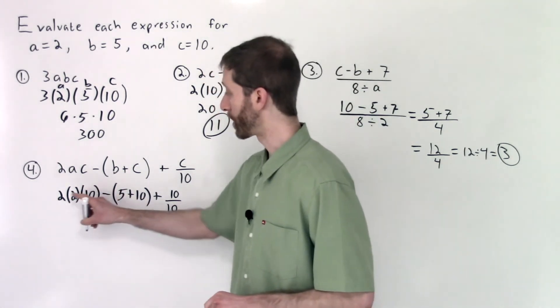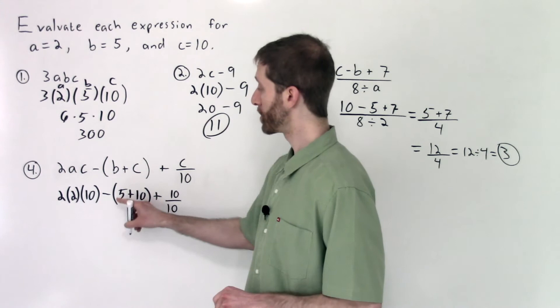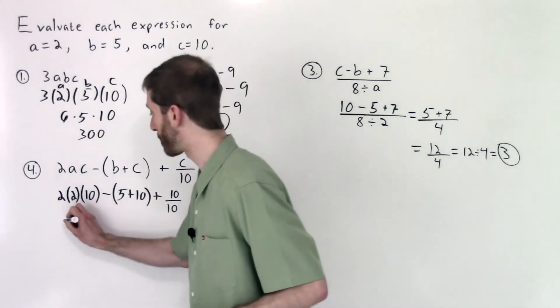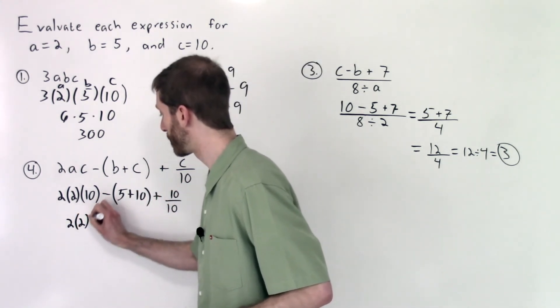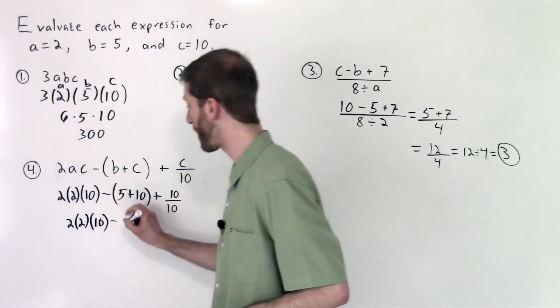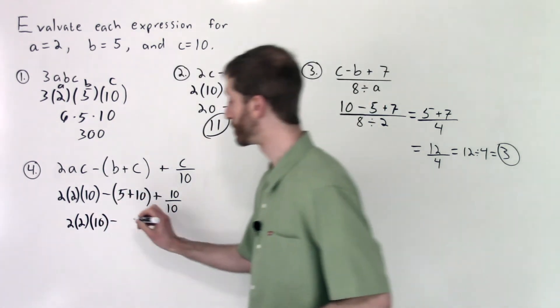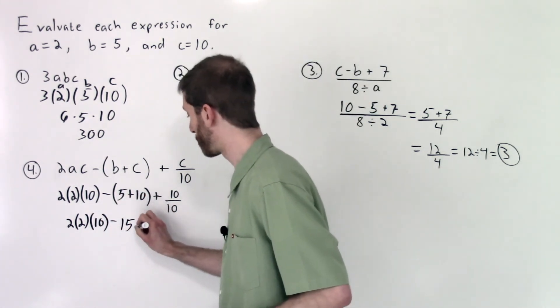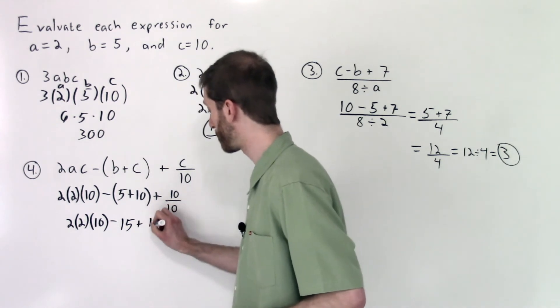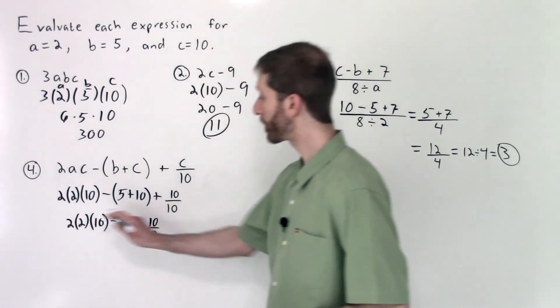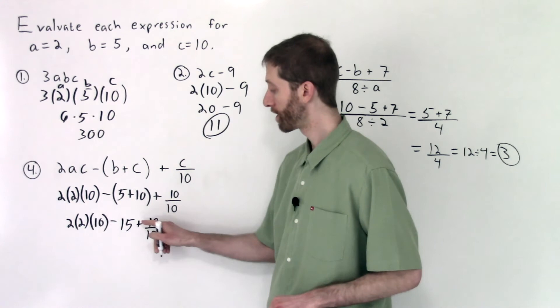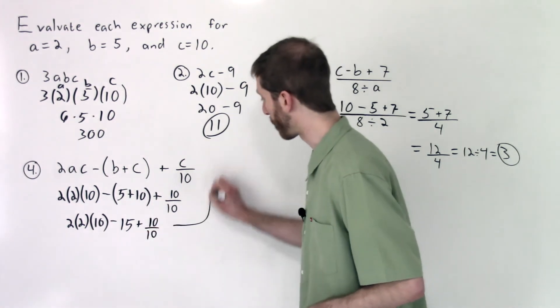Using the order of operations here, I'm going to go left to right. I noticed that I have parentheses first. So I'm going to have 2 times 2 times 10 minus 5 plus 10 is 15 plus 10 over 10, that's division. Now going left to right, we've got some multiplication followed by some division. I'm going to do that work up here.